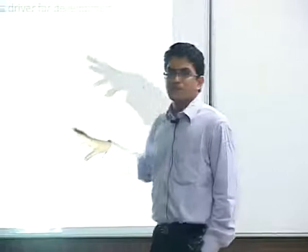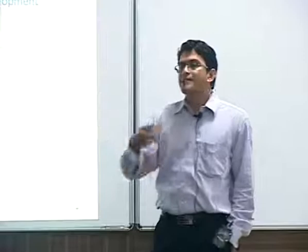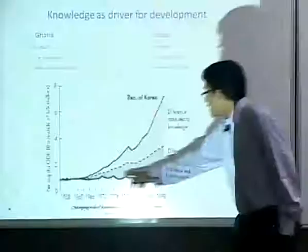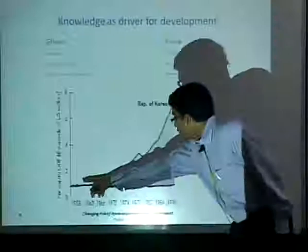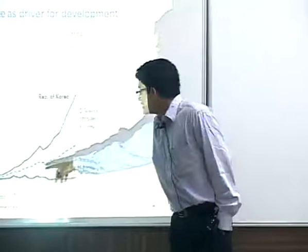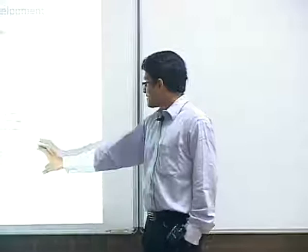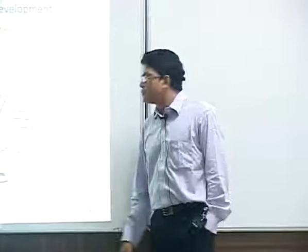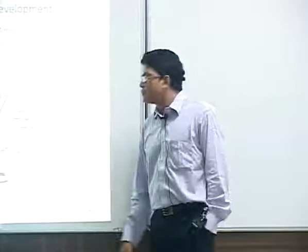The World Bank did a similar comparison. Around 1958, Ghana's per capita GDP was at least equal to or slightly higher than Korea's. After Korea roared in the 70s and 80s, Korea is now way ahead. The interesting differentiator is how much physical and human capital contributed versus knowledge. The conclusion is that knowledge has been twice as much a differentiator as any other factor. So at a macroeconomic level, knowledge is power and has its own lead.